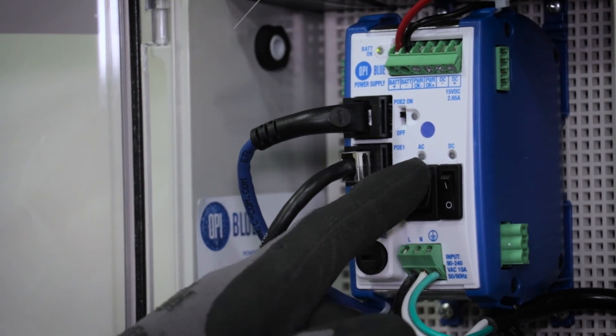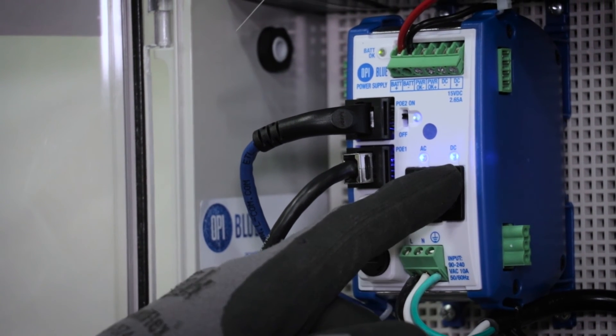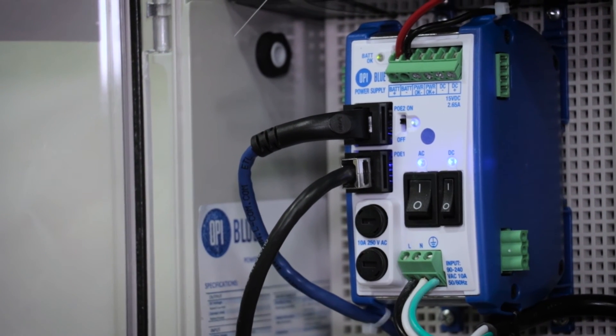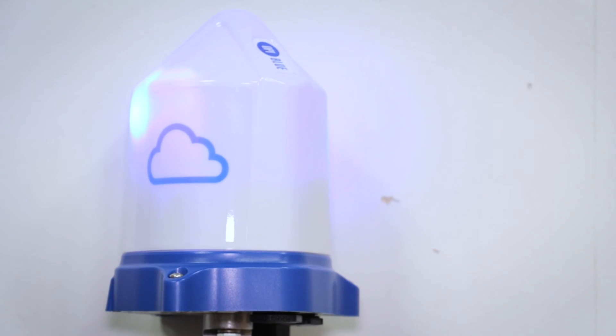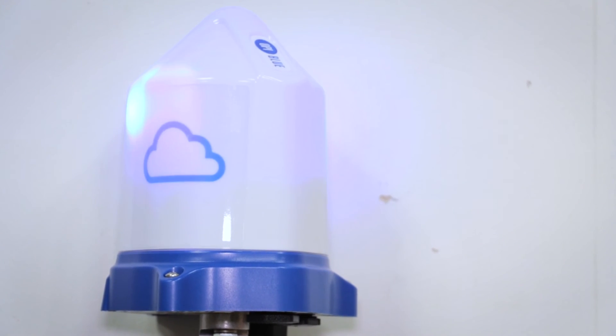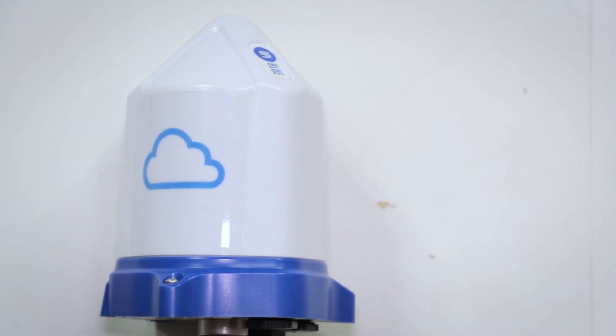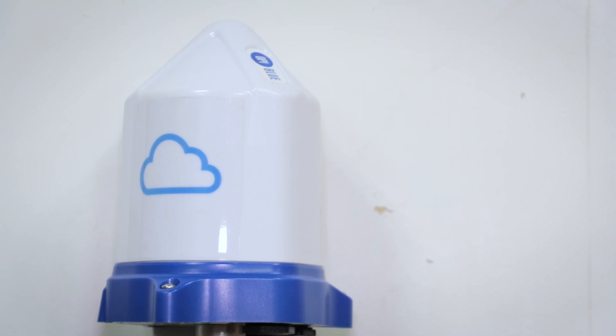Turn both the AC and DC switches to the ON position and wait 60 seconds for the Gateway Node to run through its startup sequence. Depending on lighting, you may or may not see flashing blue lights from the Gateway Node. These flashing lights are normal and indicate the system is connected.